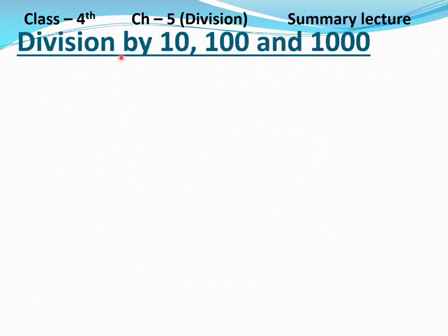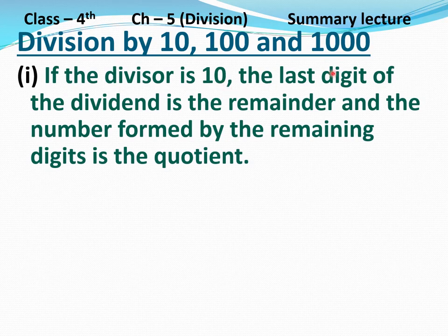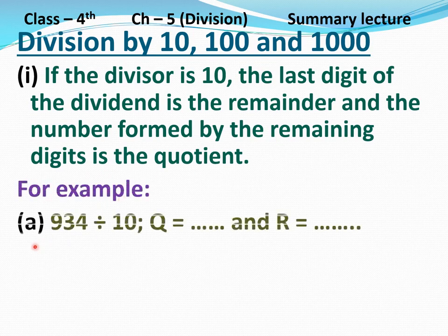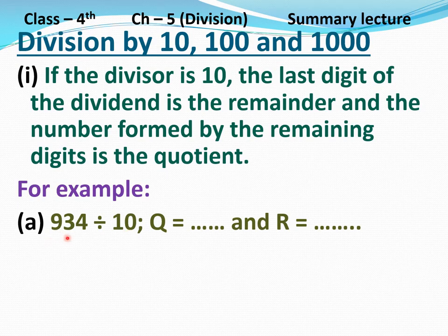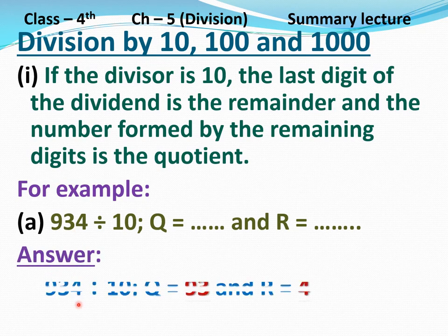Now division by 10, 100, and 1000. First: if the divisor is 10, the last digit of the dividend is the remainder and the number formed by the remaining digits is the quotient. For example, part A: 934 divided by 10. Divisor is 10, so the last digit of the dividend, 4, will be the remainder, and the remaining digits, 9 and 3, form 93, which will be the quotient. Answer: 934 divided by 10 — quotient equals 93 and remainder equals 4. Clear?